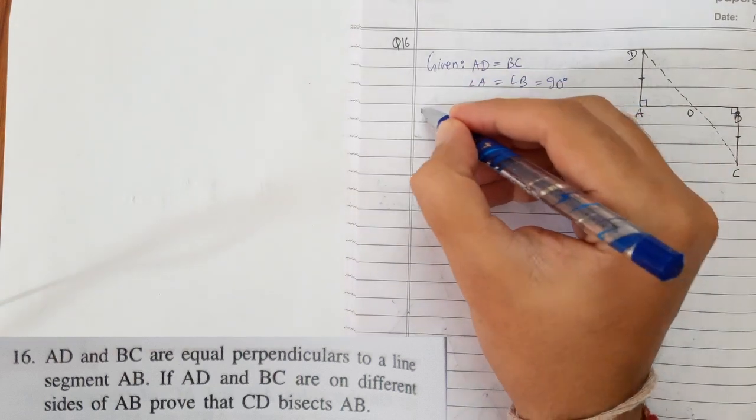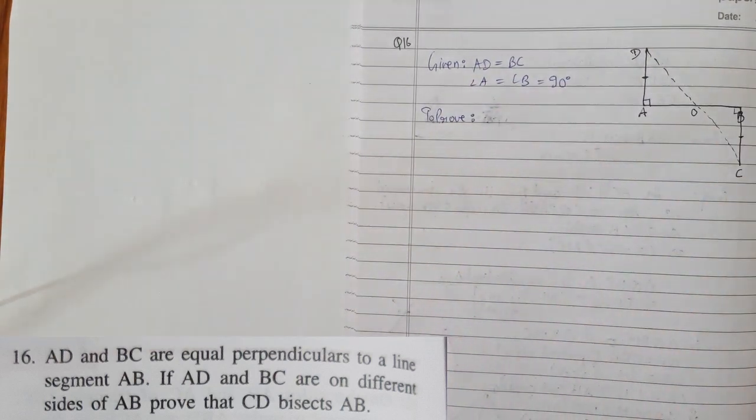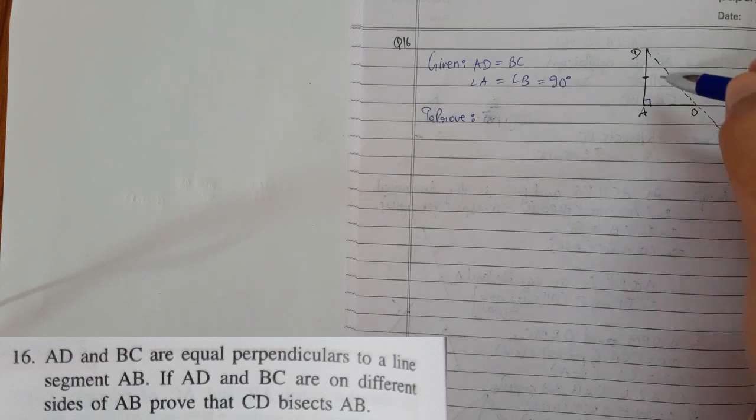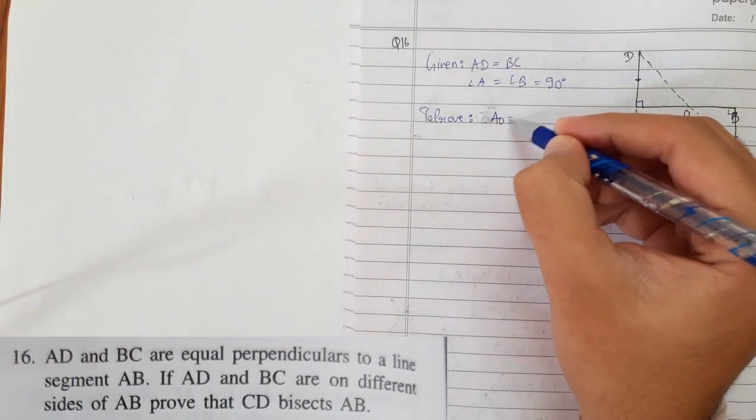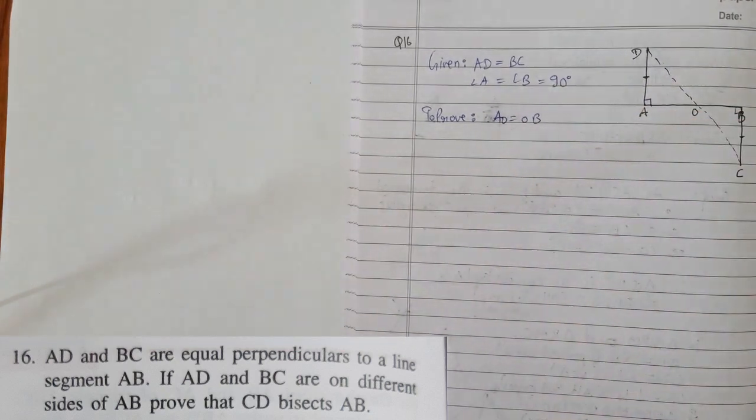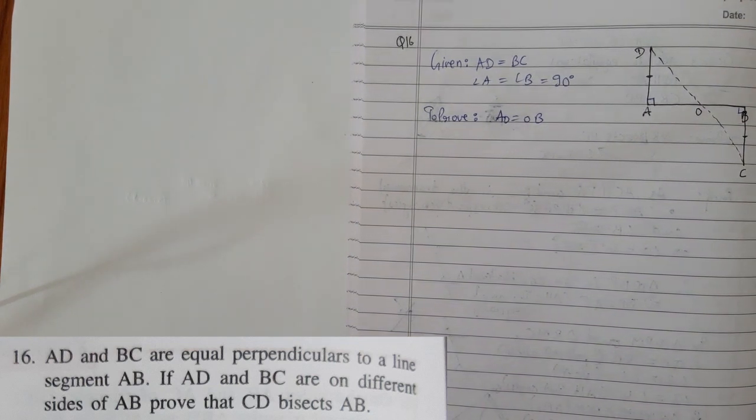Now to prove, we need to prove that DC bisects AB. That means AB has been bisected, that means AO equals to OB. Remember one thing: we need to interpret the statement into mathematical terms.